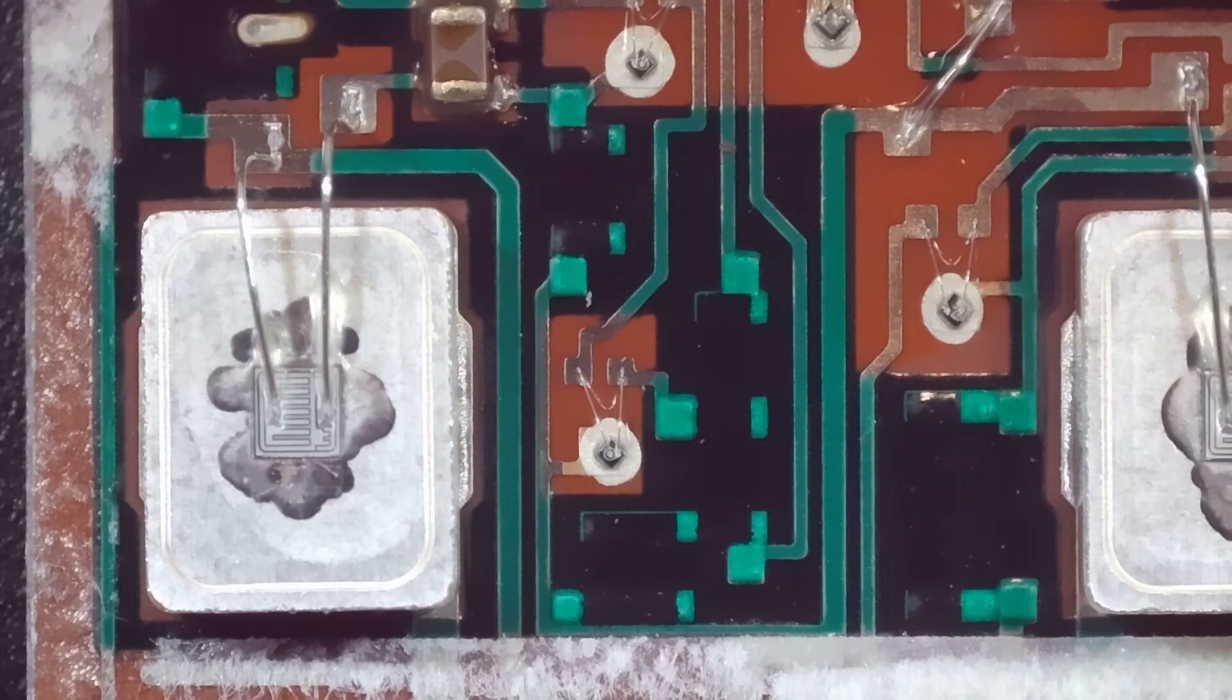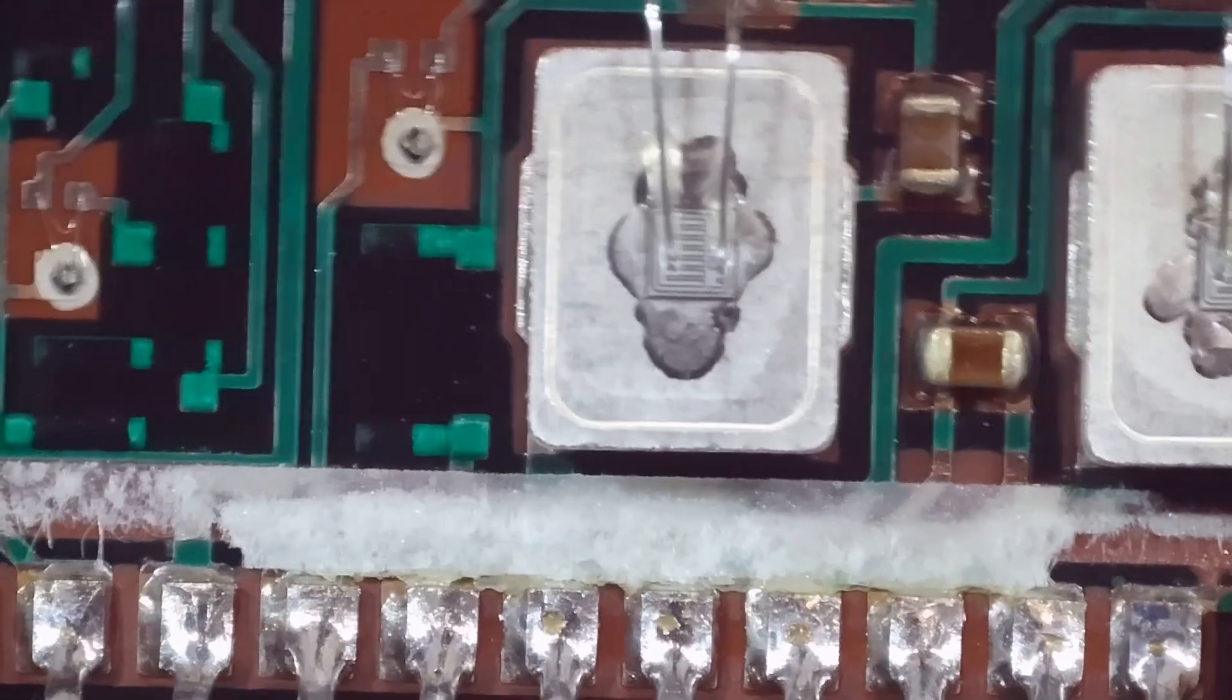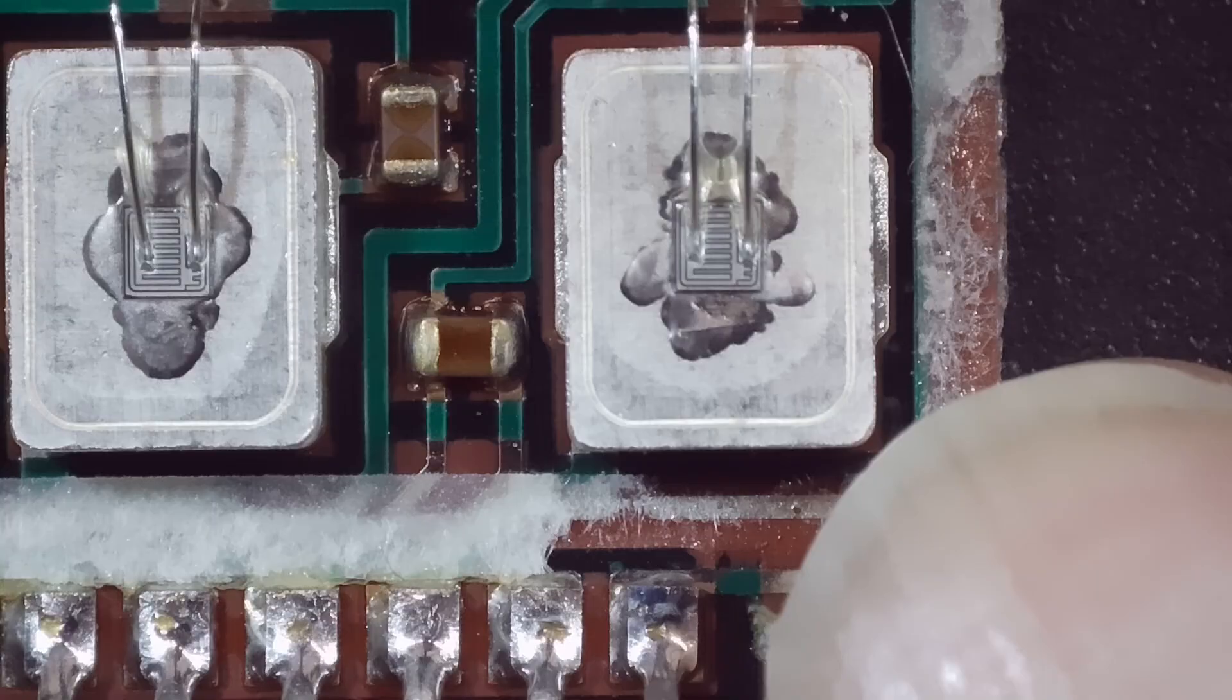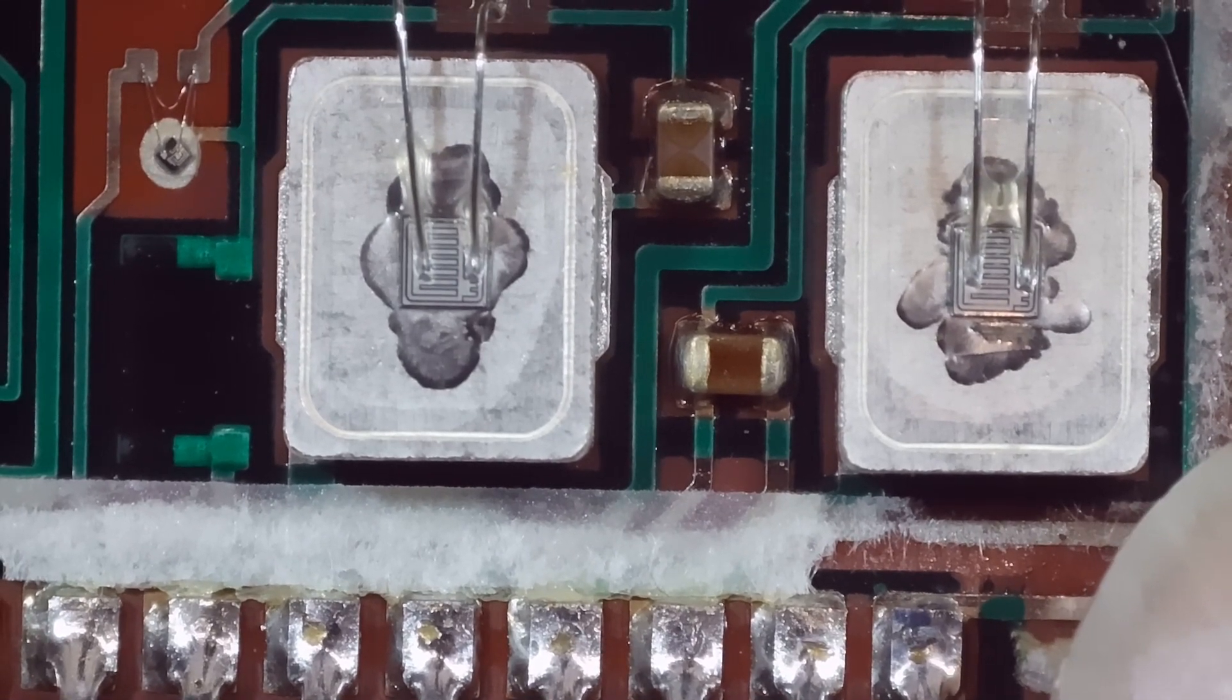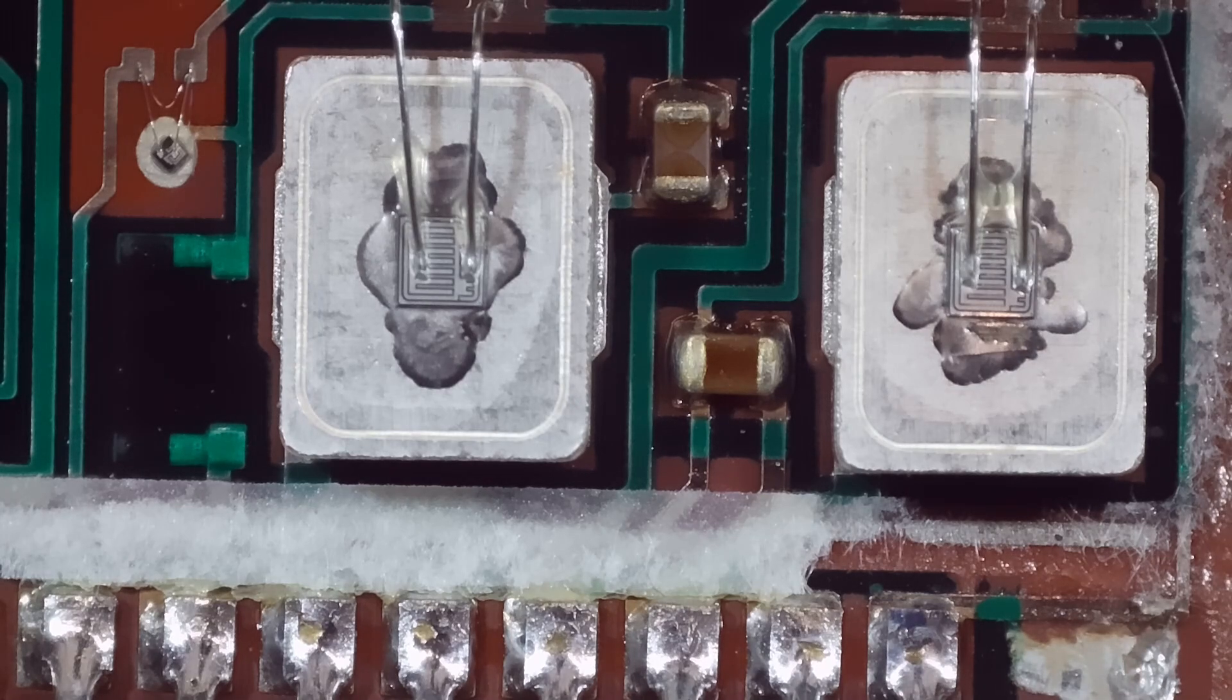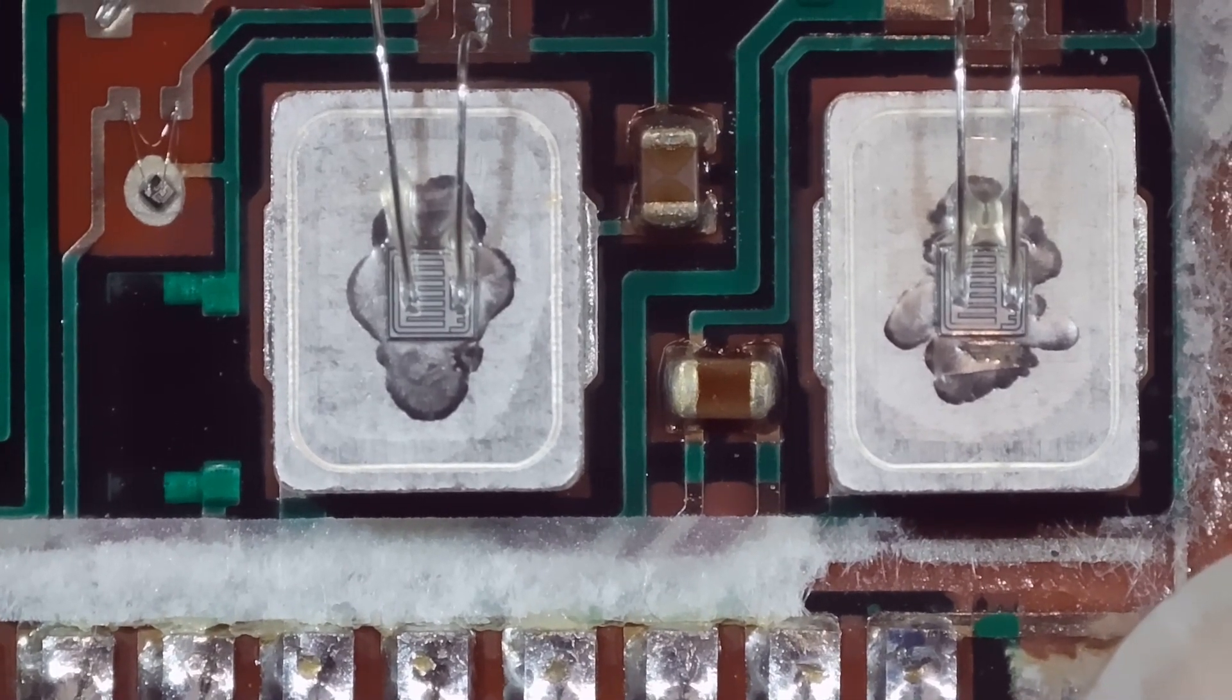You can see the transistors here. The big ones, we got three of those. Of course they're all the same. These are Darlingtons and they are a chip on a big slab of heat spreader. Looks like maybe silver plated copper or something like that.